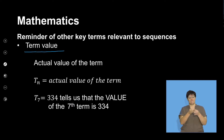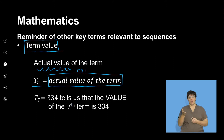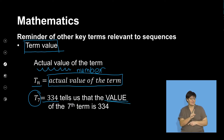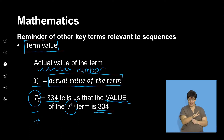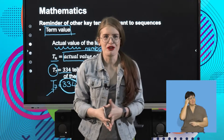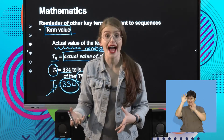We are now going to talk about term value, and that refers to the actual value of the term. So if I say TN is equal to the actual value of the term, we're going to actually have a number present here. T7 is equal to 334 tells us that the value of the seventh term is 334. The 7 is the term number, and 334 is the term value. For example, if I say T10 is equal to 700, that means the 10th term has a value of 700.